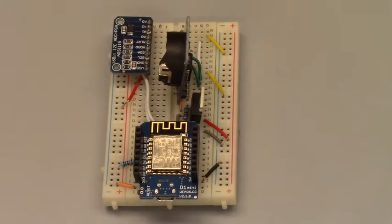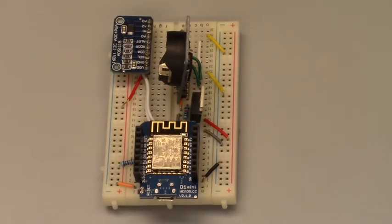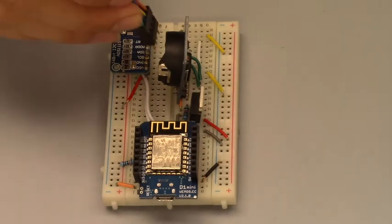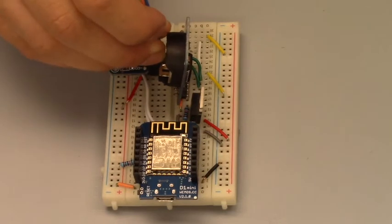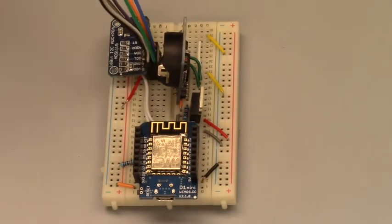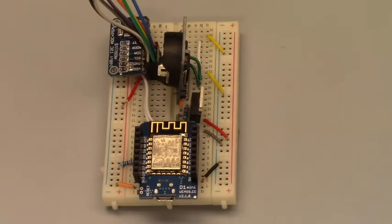The wires for the BH1750 light sensor attach from G21 to G24. The wires for the BME280 attach to H21 to H24. Lastly, the wires for the soil moisture probe attach to D28 to D30.